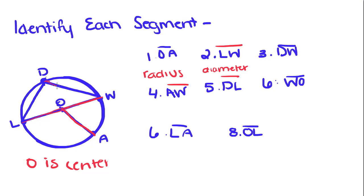DW joins this point to this point. Since it doesn't go through the center, it's just called a chord.